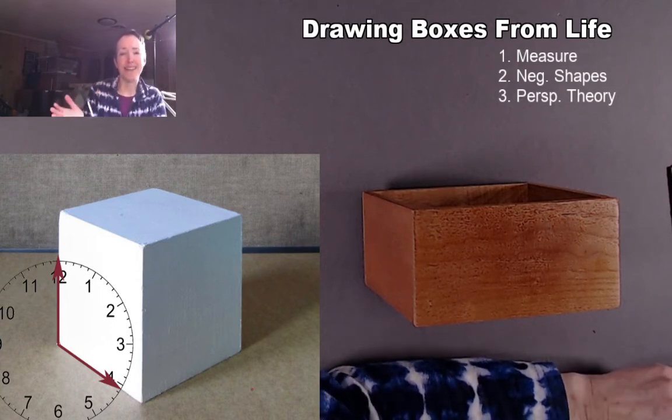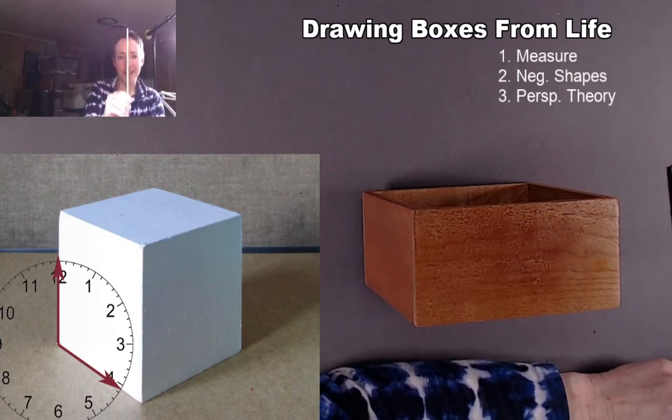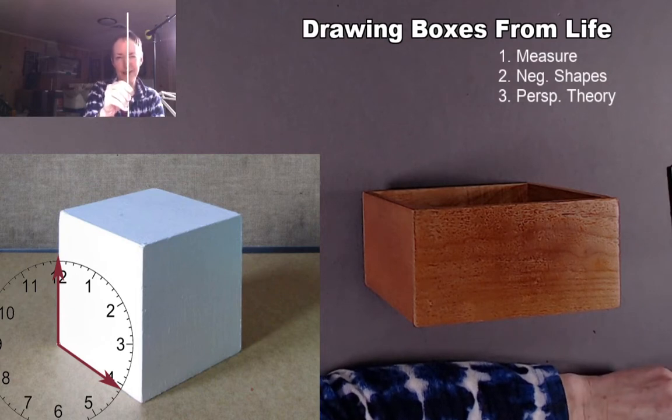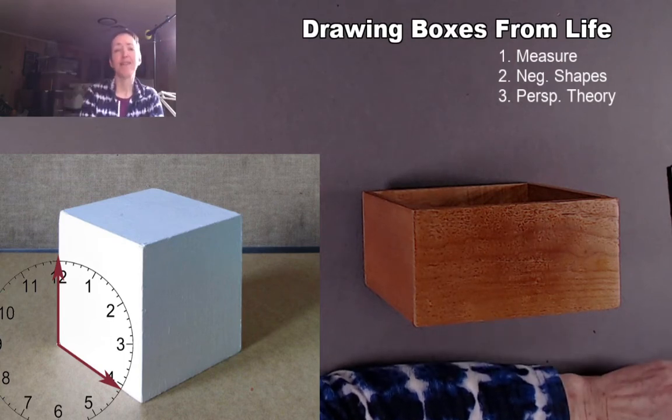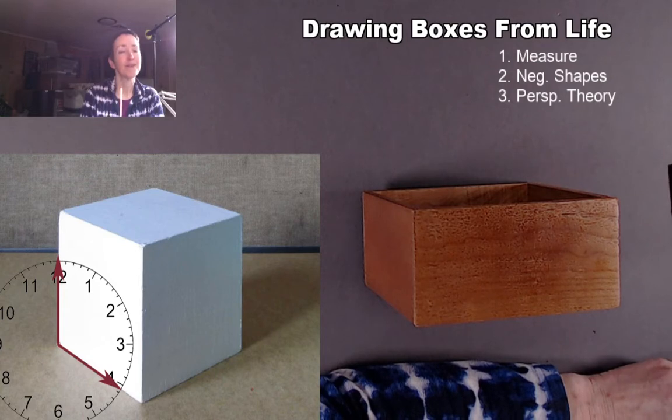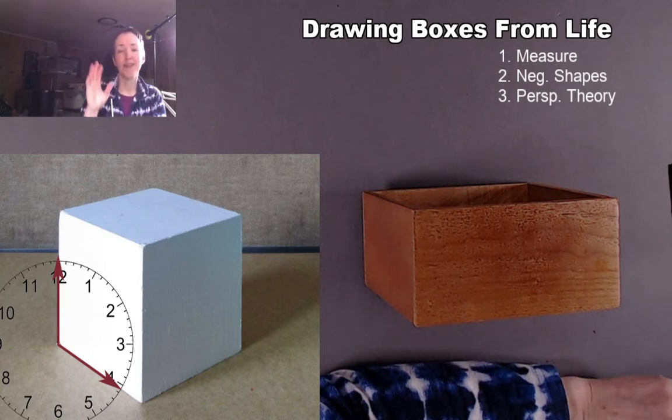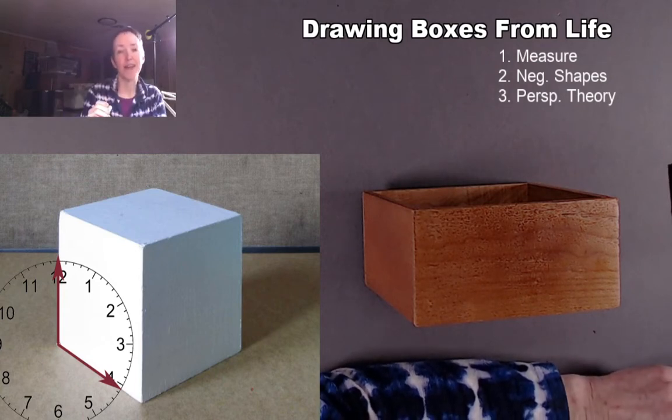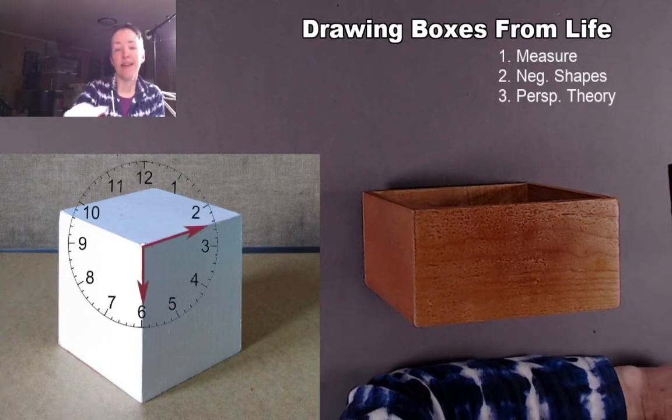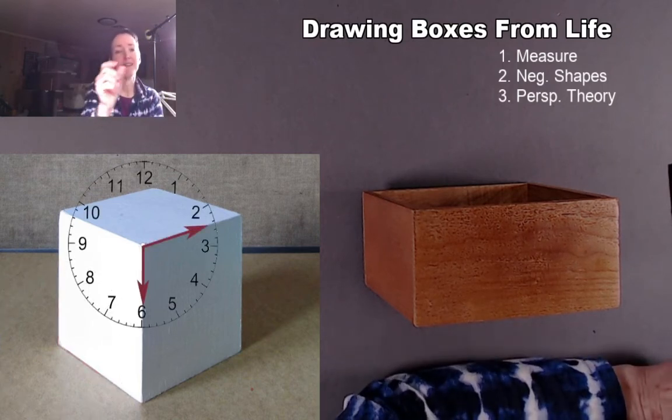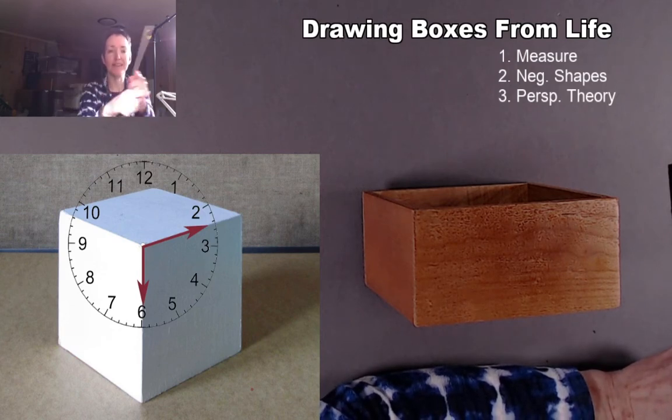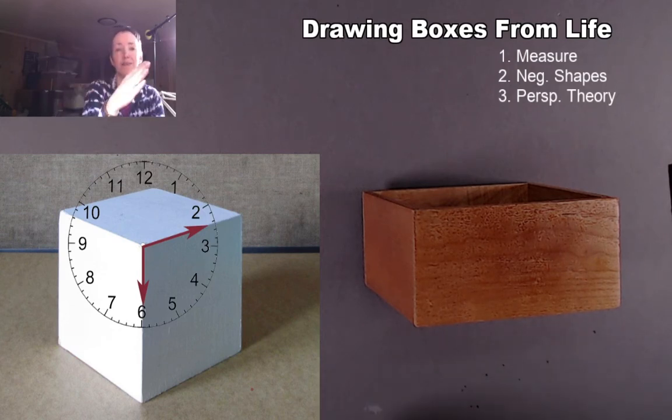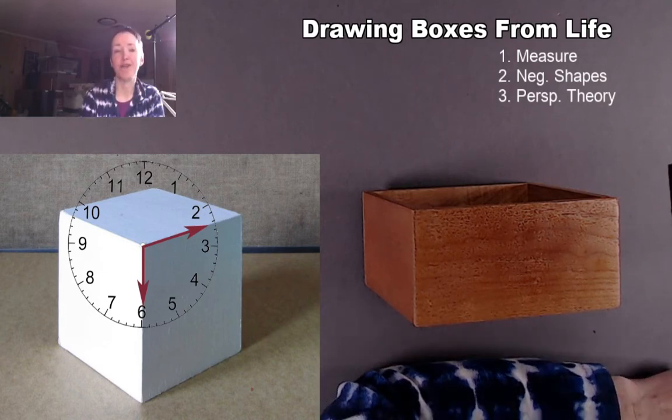Our eyes are notoriously bad at judging angles. We're pretty good at deciding if something's truly straight up and down, and we're moderately good at deciding if something really is a horizontal. But when it comes to those in-between angles, we are really bad at estimating what those are. So we need all the help we can get to judge those angles more accurately. Here, we're still using a clock face, and we've just shifted it to check some different angles. You could imagine those red hands of the clock moving to several different points to judge several different angles within the same drawing.